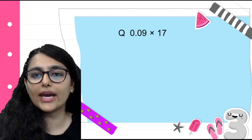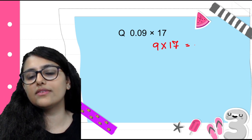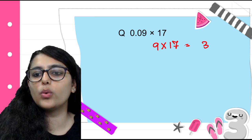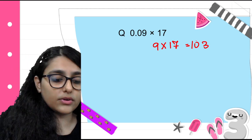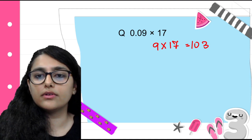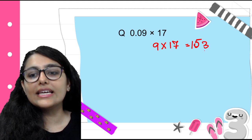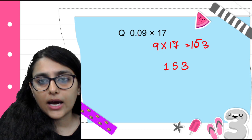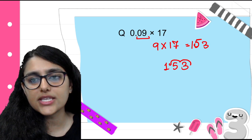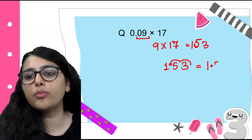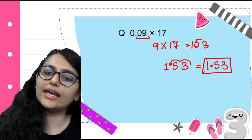Practice: 0.09 × 17. Ignore the decimal — what remains is 9 × 17. 7 × 9 = 63, 9 × 1 = 9, plus 6 = 15 — so 153. Now count decimal digits: 2 digits after the decimal. From the right-hand side, count 2 digits and put the decimal. So my answer is 1.53. Be careful about how many decimal digits there were, and then you can place it correctly.